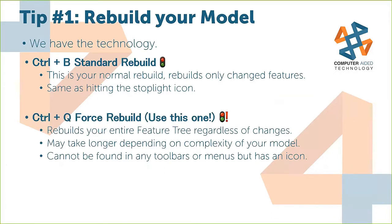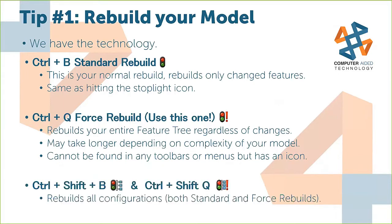Ctrl-Q is a forced rebuild — it rebuilds your entire feature tree regardless of changes. It may take longer on complex models, but I use this whenever I open any customer model or my own. I rebuild the whole thing first to show me if there are any errors throughout the tree right away. Note: this cannot be found in any toolbars or menus, but it does have an icon you can add. Ctrl-Shift-B is a standard rebuild for all configurations, and Ctrl-Shift-Q is a forced rebuild for all configurations.